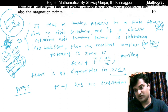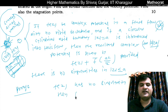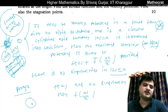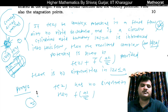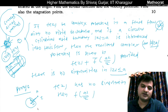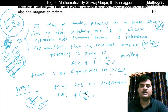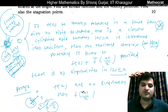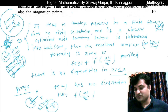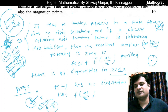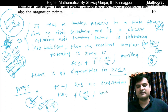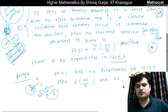If F(z) has no singularity for modulus z less than or equal to A, then F-bar(a² / z̄) has no singularity for modulus z greater than or equal to A. The point a²/z̄ is the inverse point of z with respect to the circle. If F(z) has singularities only outside the circle (modulus z greater than A), then the inverse point a²/z̄ will lie inside, so F-bar(a² / z̄) will be analytic outside. Thus F-bar(a² / z̄) has no singularity for modulus z greater than or equal to A.